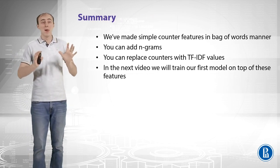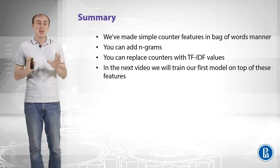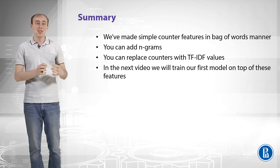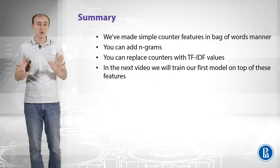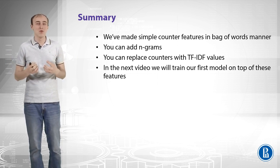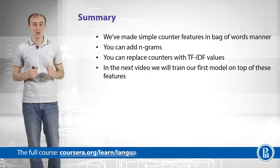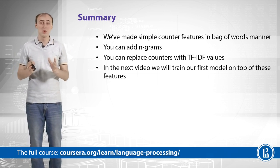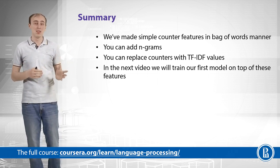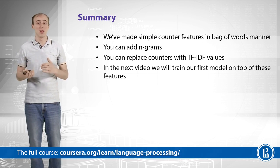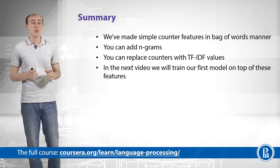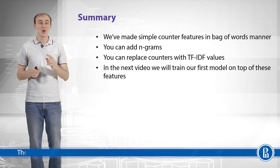Let's summarize. We've made simple counter features in a bag-of-words manner, replacing each text with a huge vector of counters. You can add n-grams to preserve some local ordering, which further improves the quality of text classification. You can replace counters with TF-IDF values, which usually gives a performance boost as well. In the next video we will train our first model on top of these features.